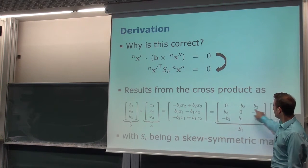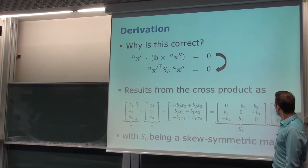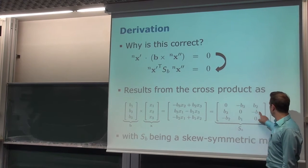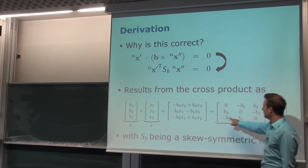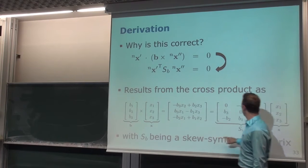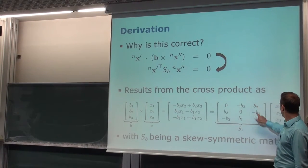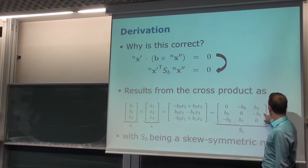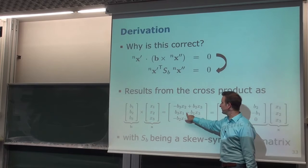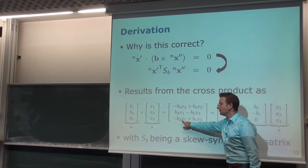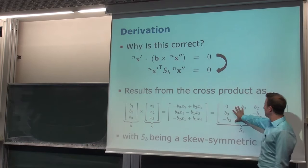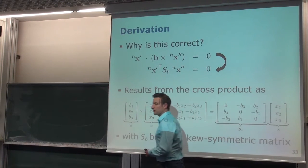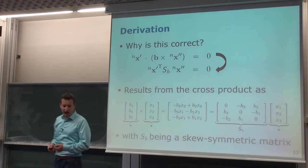As a check: multiplying the first row of the skew-symmetric matrix by the vector X gives minus B3·X2 plus B2·X3, which matches the first component of the cross product; X1 cancels out, X2 cancels in the second row, X3 in the third. Multiplying this matrix by the vector gives exactly the same result as computing the cross product — it is just a different way of writing it.